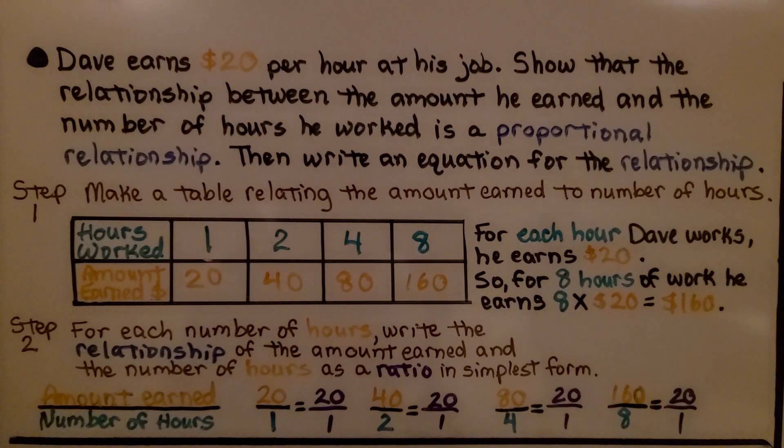So here's our first problem. Dave earns $20 per hour at his job. Show that the relationship between the amount he earned and the number of hours he worked is a proportional relationship. Then write an equation for the relationship. So step 1 is, we make a table relating the amount earned to number of hours.